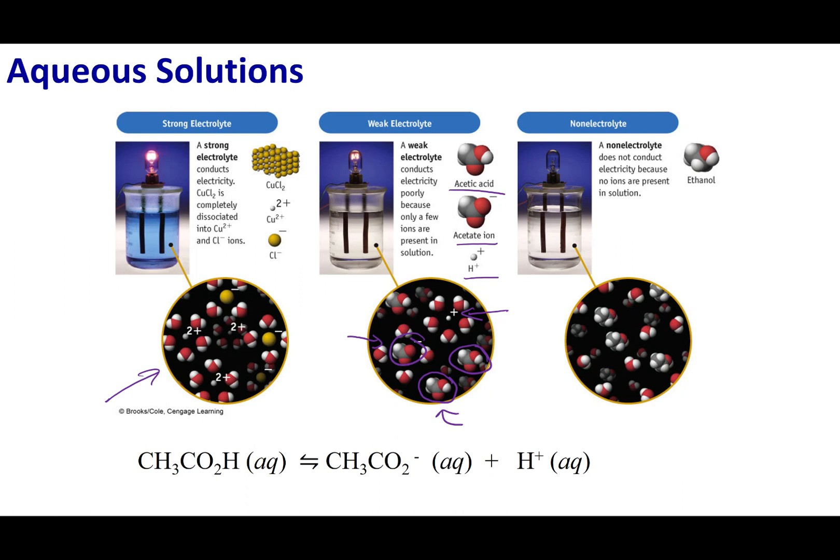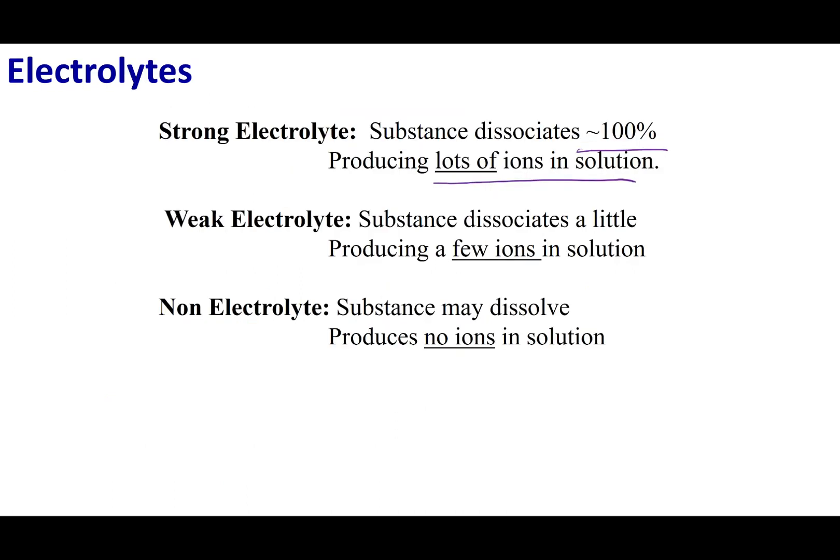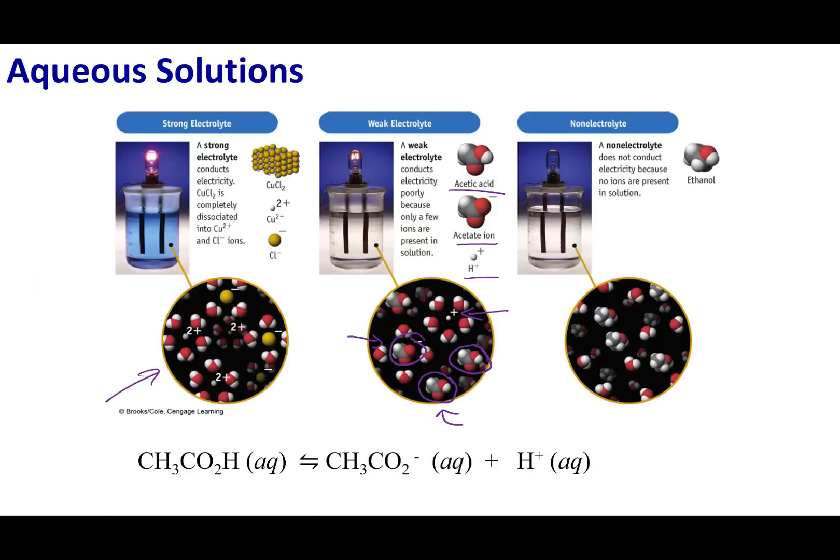So if you were to do the calculation, it turns out that acetic acid, 97% of it sticks together and only 3% of it actually breaks up. So this is why we consider it a weak electrolyte. It doesn't dissociate a hundred percent. It only makes a few ions in solution. Now for now, there is only one weak electrolyte I want you to know, and that is acetic acid.